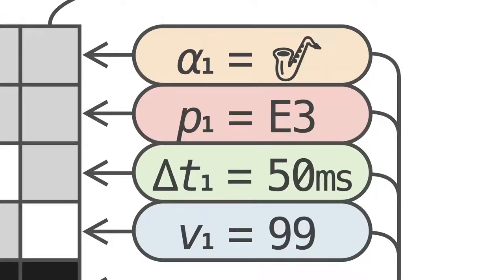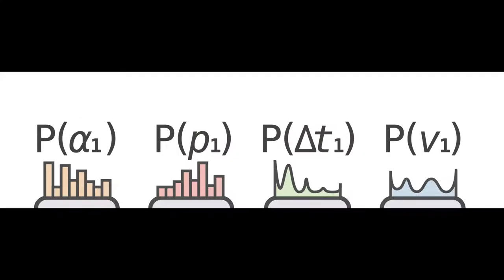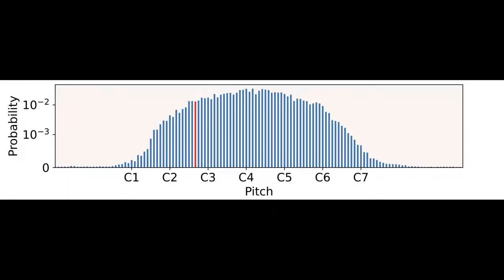So, each sub-event, pitch, instrument, velocity, time, has a distribution. That is, Notochord returns not just a predicted next value, but the relative probabilities of all possible values.